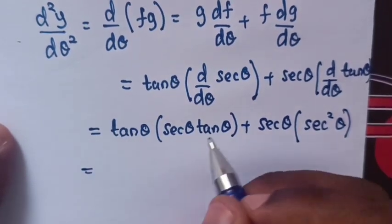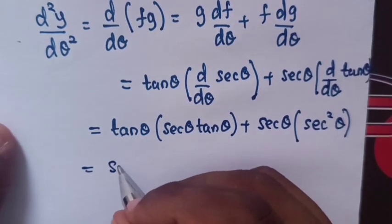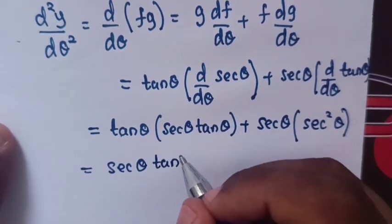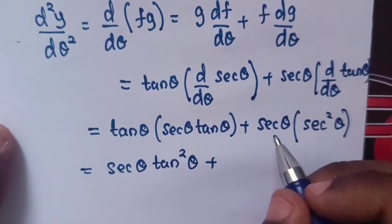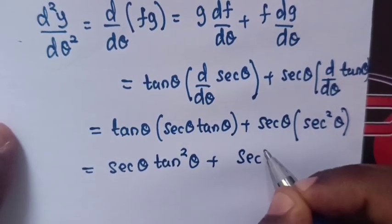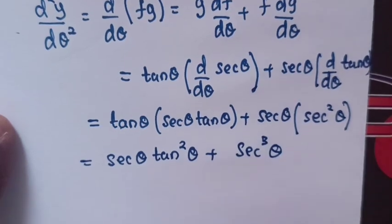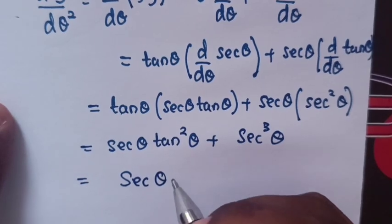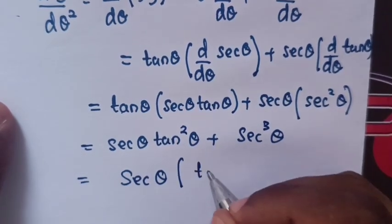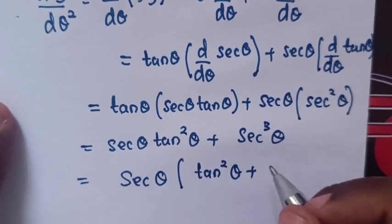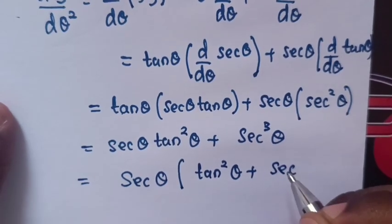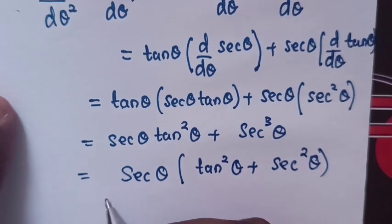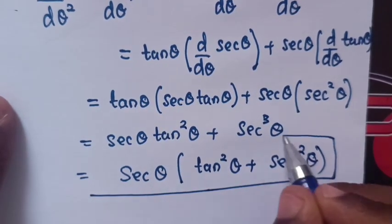Here, sec θ is common, so we factor sec θ out of the bracket, giving us sec θ times (tan²θ + sec²θ). This is the final answer.